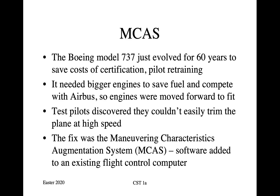Once they got the aircraft into its test flight program, the pilots discovered that they couldn't easily trim the plane at high speed. When you fly an aircraft, you've got the joystick which you can pull to raise the nose or push to lower it, and this activates the stabilizer — the horizontal control surface in the tail. There's a trim wheel to zero out continuous control pressure, but in the Boeing 737 it could require as much as 40 or 50 kilograms of force to trim the aircraft when maneuvering at high speed. The fix Boeing went for was called the Maneuvering Characteristics Augmentation System, or MCAS — software added to an existing flight control computer.